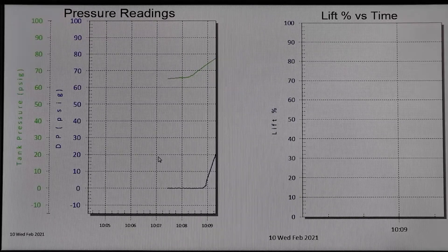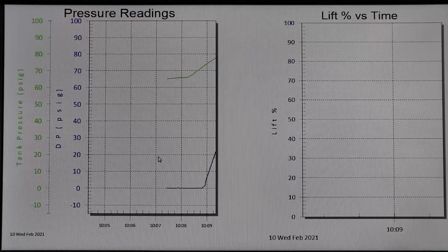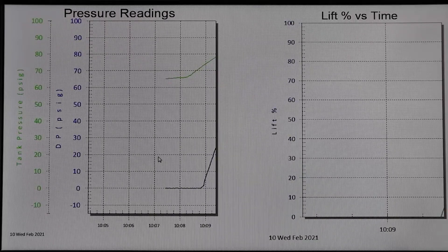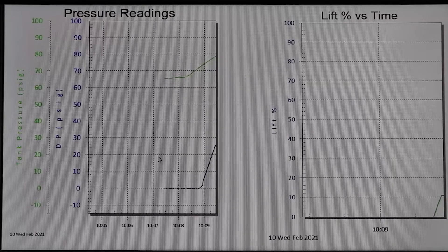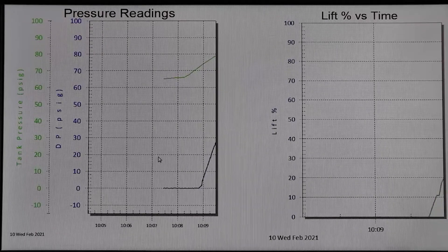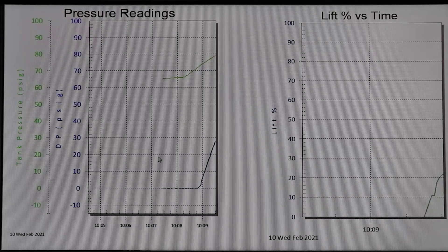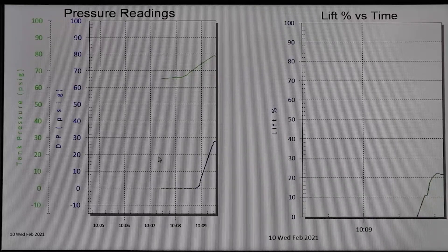On the vertical axis you will see the system pressure shown in green and the differential pressure reading of the valve's dome to inlet in blue. The right graph shows the percentage of the valve's lift over time and is calculated based upon the valve size and differential pressure.